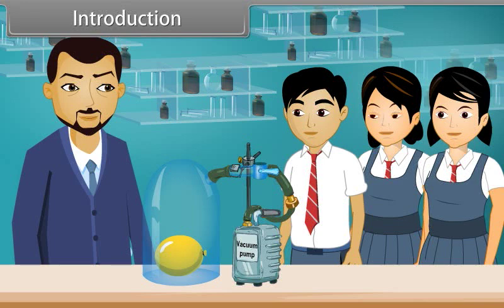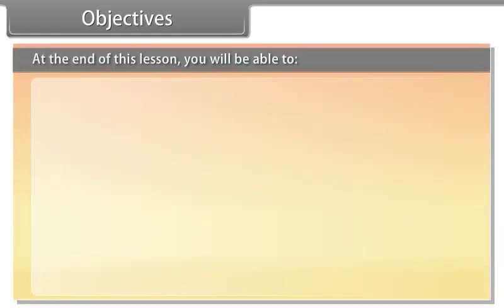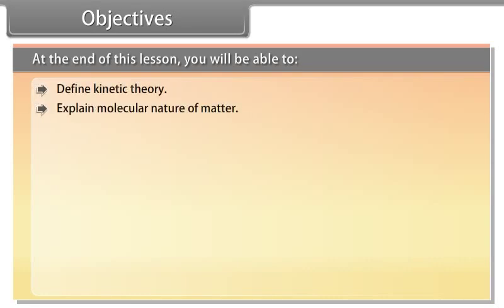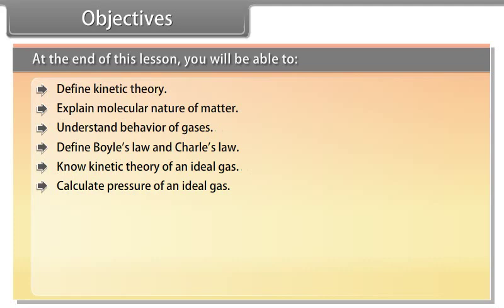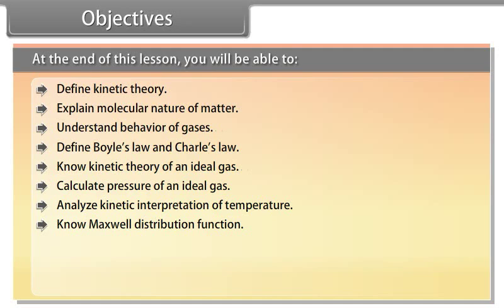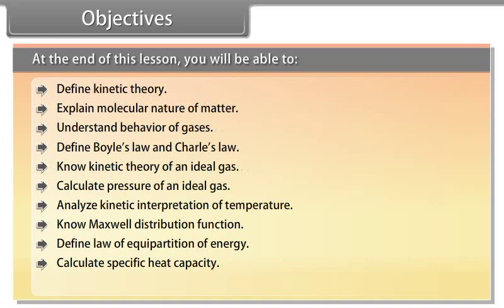So students, today we learn more about the kinetic theory. At the end of this lesson, you will be able to define kinetic theory, explain molecular nature of matter, understand behavior of gases, define Boyle's law and Charles' law, know kinetic theory of an ideal gas, calculate pressure of an ideal gas, analyze kinetic interpretation of temperature, know Maxwell distribution function, define law of equipartition of energy, calculate specific heat capacity, and define mean free path and Brownian motion.